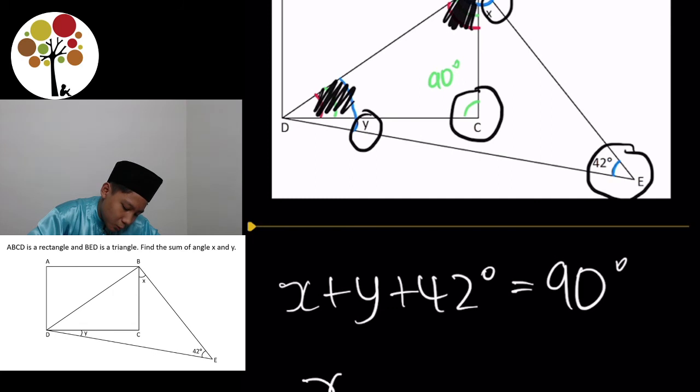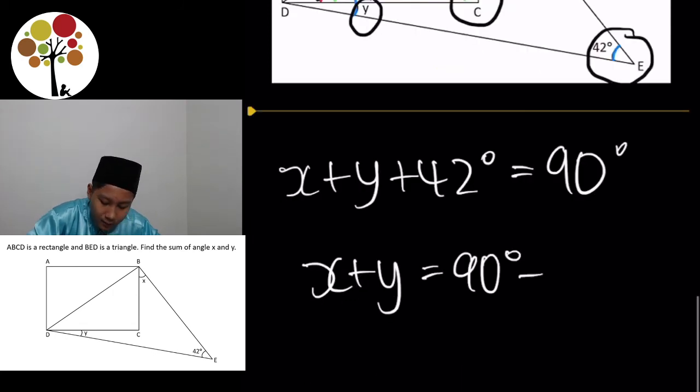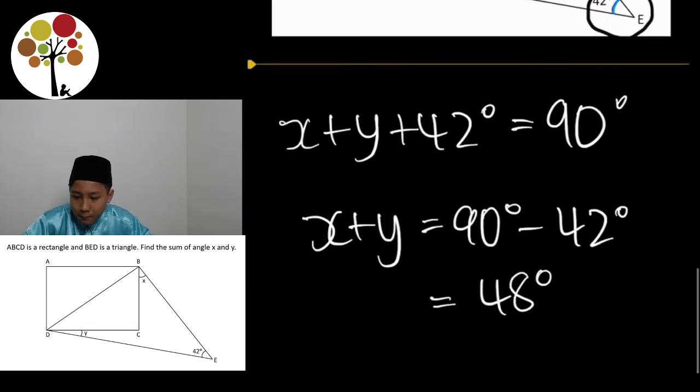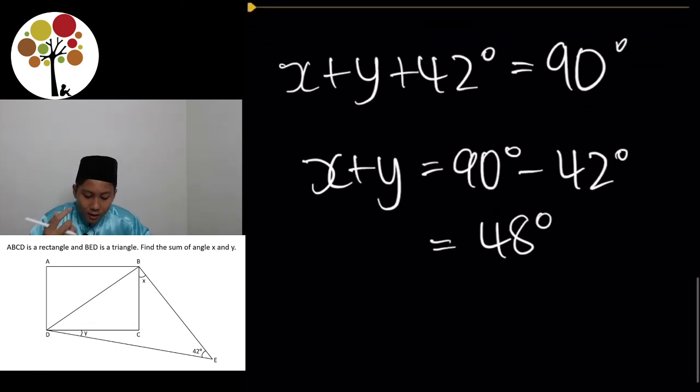So, that means that X plus Y plus 42 degrees is equal to 90 degrees. So, X plus Y is simply 90 degrees minus 42 degrees, which is equal to 48 degrees. Now, if the people who did not read the question properly, they might actually try to find X and Y on its own. But, the question is, find the sum of angle X and angle Y. Thus, that is all we have to do. It's just two steps. The answer is 48 degrees for the sum of angle X and Y.